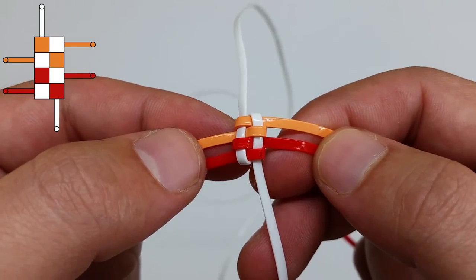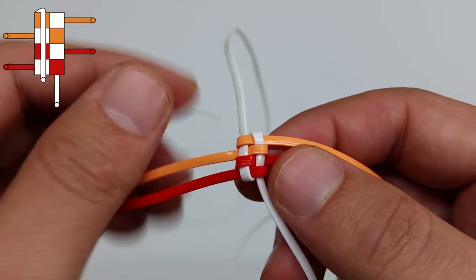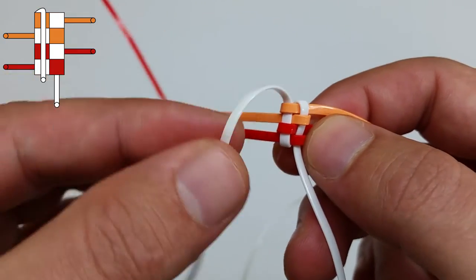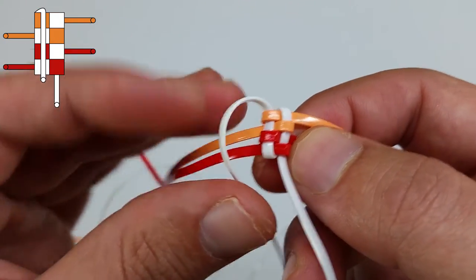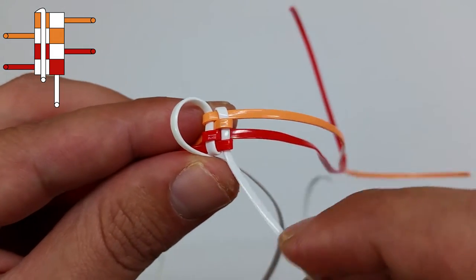To make a brick stitch with a right-hand orientation, where the single point is on the right, we're going to pick the two right strings. Because the left string is on the left, we're going to put it on the left. And because the right string is on the right, we're going to keep it on the right.